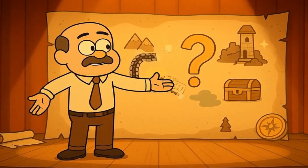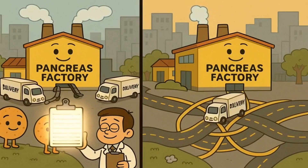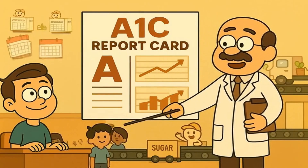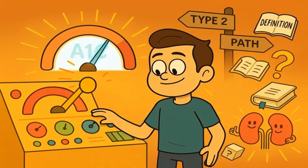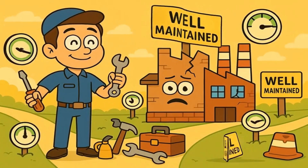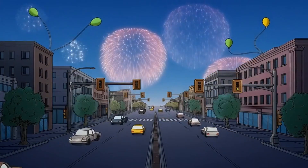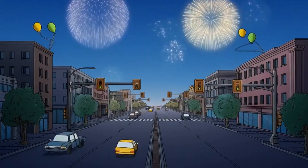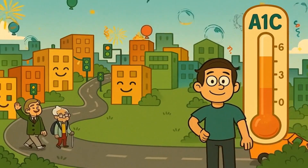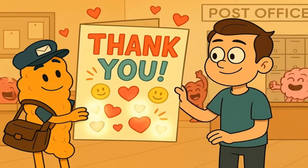Let's recap this whole blood sugar adventure. Diabetes happens when your body's sugar delivery system breaks down, either because the insulin factory gets destroyed or because the delivery process stops working smoothly. Your A1C is like a report card showing how well your delivery system has been working over the past few months. Lowering your A1C is definitely possible and really important for your health, but whether that reverses diabetes depends on what type you have and how you define reversal. For type 1, great control doesn't fix the broken factory, but it does keep you healthy. For type 2, getting your A1C to normal might put your diabetes in remission, but it takes ongoing effort to keep it there. Either way, a lower A1C means your body's city is running more smoothly — and that's always worth celebrating. Now go forth and manage that delivery system like the capable city manager that you are. Your pancreas will send you a thank you card.